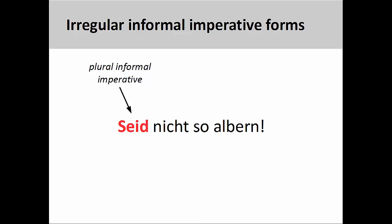Finally, as we have seen in the prior presentations, the imperative form of sein, meaning to be, is also irregular in the plural informal imperative. For example, seid nicht so albern, don't be so silly.